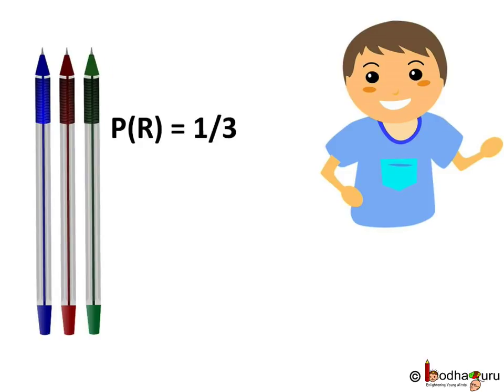Let R be the event that the pen taken out is a red ball pen. The number of outcomes favoring R is 1, and the total number of outcomes is 3. So P(R) = 1/3. That is, there is a 1 out of 3 chance that a red ball pen is picked up by Aman.